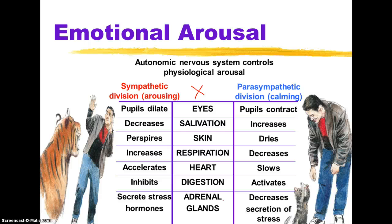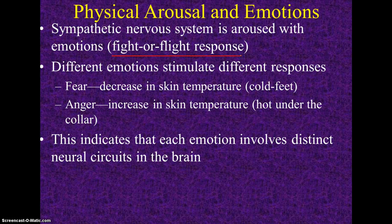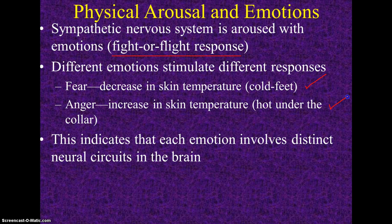It would be great if we could come up with some mnemonic to remember these. The sympathetic nervous system is aroused — we've talked a lot about the fight-or-flight response, and this kind of helps bring those together. We know that different emotions stimulate different responses. A theory talks about changes in skin temperature in terms of fear. Here's an example of skin temperatures in terms of anger.